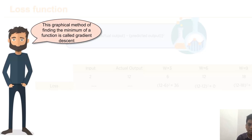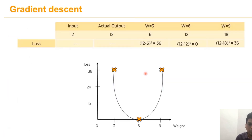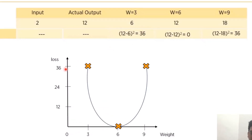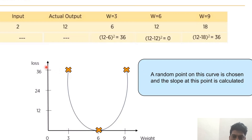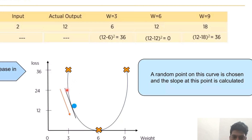Using a graphical method we minimize this loss function — that method is called the gradient descent algorithm. We plot a graph of weight versus loss: at w = 3, loss = 36; at w = 6, loss = 0; at w = 9, loss = 36. A random point on this curve is chosen and the slope at that point is calculated. We need to move toward the minimum loss of 0.